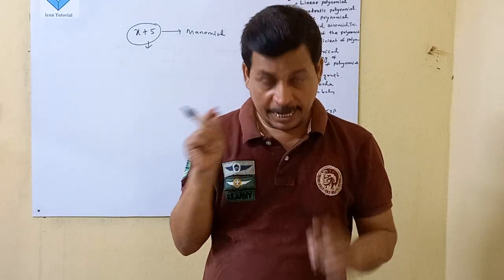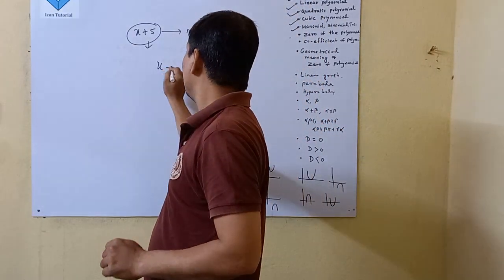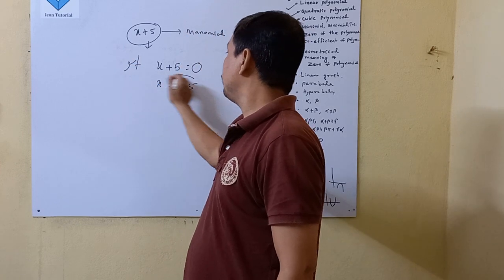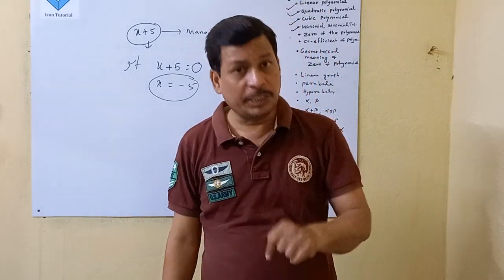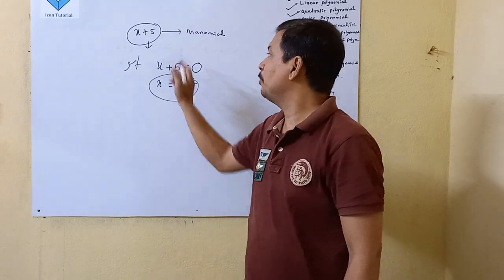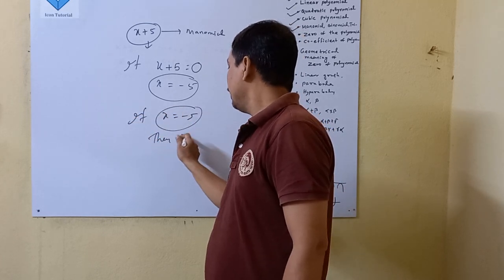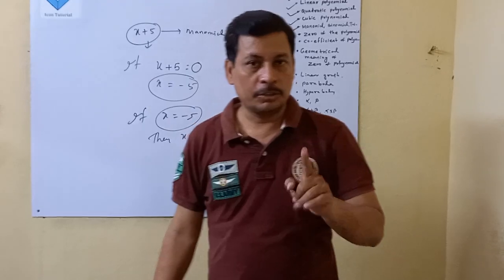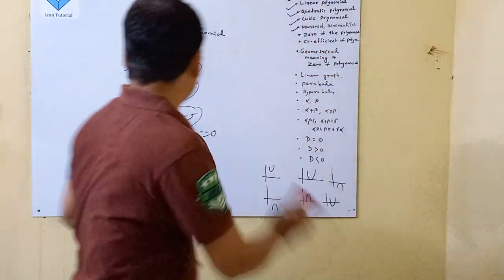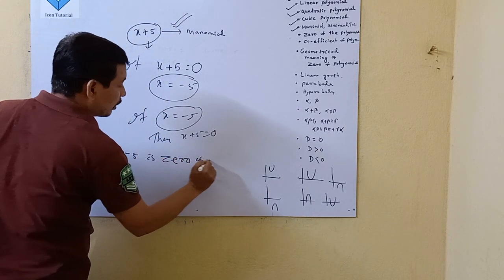For what value of x will this polynomial be 0? So this polynomial will be 0 means x plus 5 is equal to 0. If x plus 5 is equal to 0, then x is equal to minus 5. Or, if x is equal to minus 5, then x plus 5 is equal to 0. So for this polynomial, minus 5 is the zero of the polynomial. Therefore, minus 5 is the zero of the polynomial.